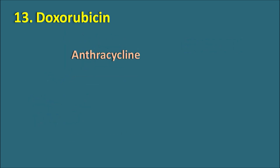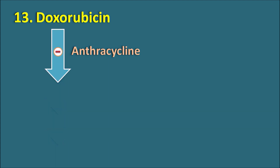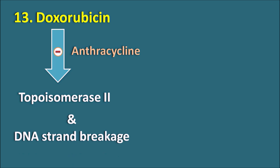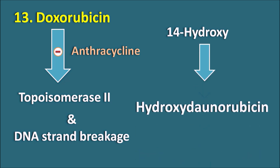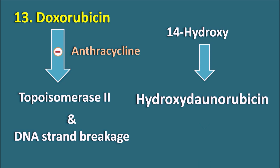The thirteenth one is doxorubicin. Doxorubicin is an anthracycline antibiotic that inhibits topoisomerase 2 action. Topoisomerase 2 is responsible for relieving topological strain in DNA so that DNA replication can proceed. Doxorubicin can also directly act on DNA and produce free radicals causing DNA strand breakage. Within the name, 'doxo' indicates a hydroxy group at the fourteenth position compared with its analog daunorubicin. So doxorubicin is also called hydroxydaunorubicin — the alternative name for doxorubicin.